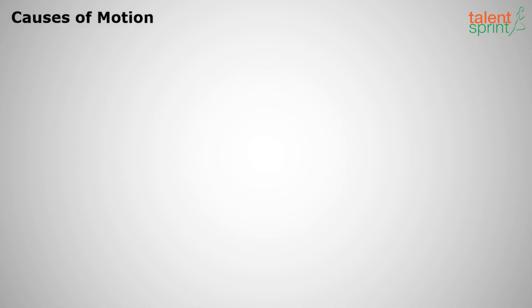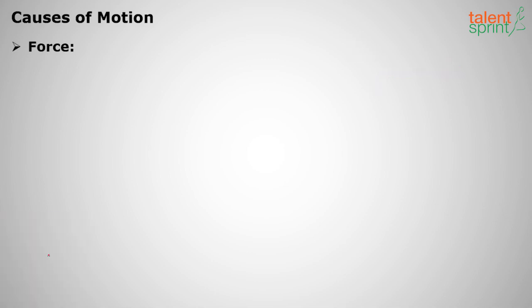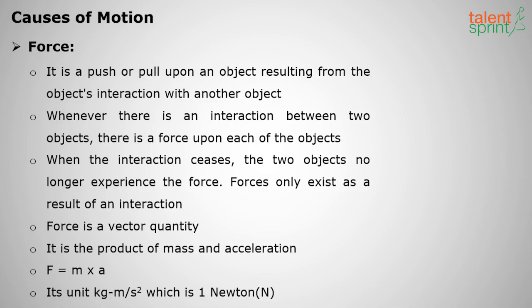Moving on to the causes of motion — how is motion caused? If I want to move from point A to point B, there must be some external or internal force applied on me to make me move. Any force, whether internal or external, is needed to move from one place to another. Force is nothing but a push or pull upon an object resulting from the object's interaction with another object.